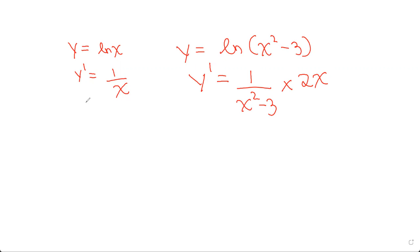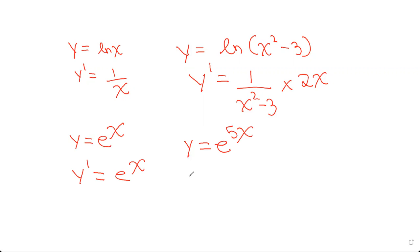When y equals e to the power of x, y' is also e to the power of x — it stays the same. But sometimes you have to apply chain rule. For example, when y equals e^(5x), y' equals e^(5x) times the derivative of 5x, which is 5. So y' = 5e^(5x). You should never forget to apply chain rule to all functions whenever it's possible.